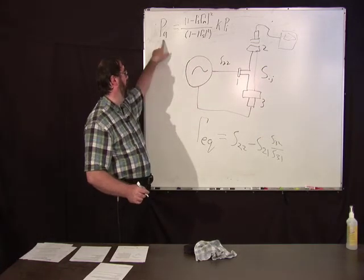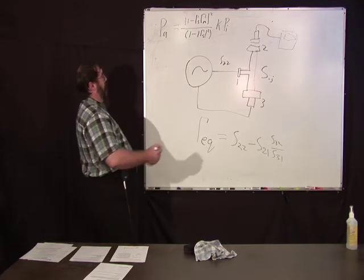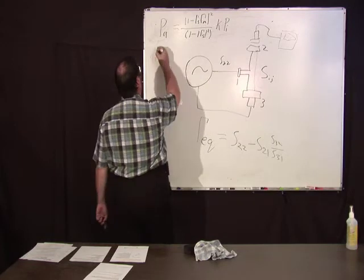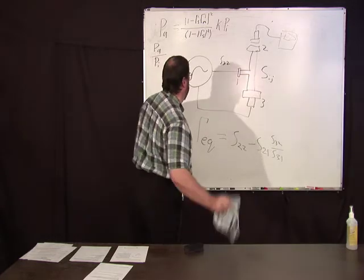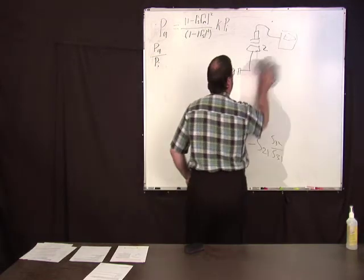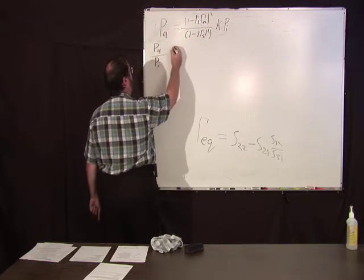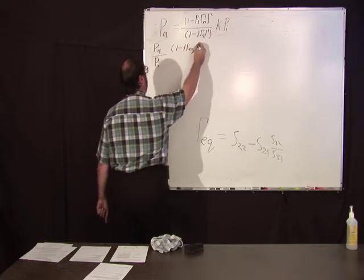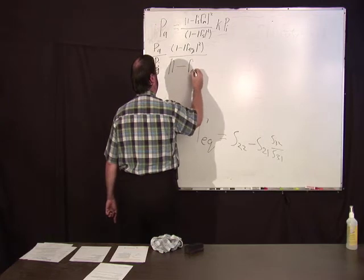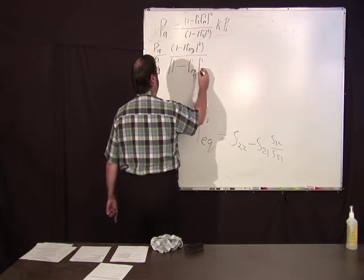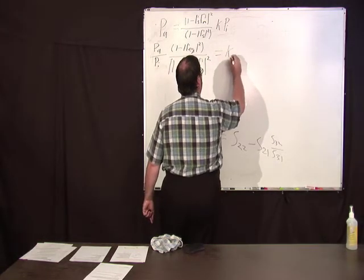So you can come up with, you can solve for the available power now with a known source reflection coefficient. Once you've done that, you know what the available power is. So you take your standard off and put your unknown on there. Well, you invert this, so you want to solve for K. So you do PA over PI. So we've got PA over PI one minus gamma EQ squared over one minus absolute value of one minus gamma EQ gamma D squared equals K device under test.